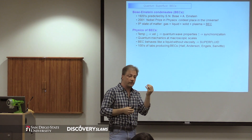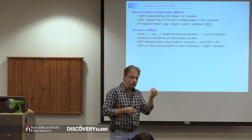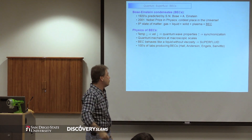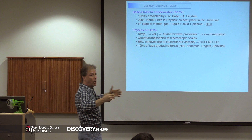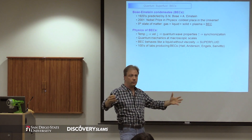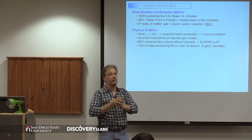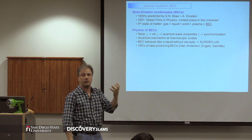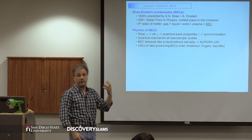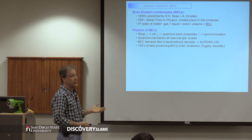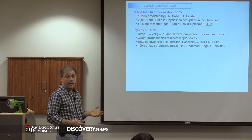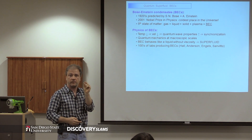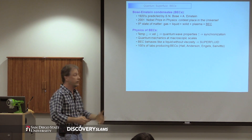So basically, instead of just having, at the quantum level, the description of a few particles, you have many, many particles — we're talking about millions or hundreds of millions of atoms — that all collapse to the same quantum state. So basically, you have a macro particle that behaves like a quantum object. From a physical viewpoint, you can now do quantum mechanics at the macroscopic scale. And macroscopic here means micron size, but that's still macro with respect to quantum mechanics.